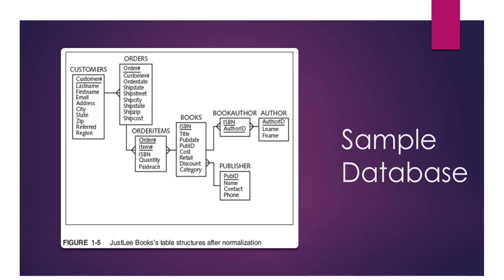This is the database we'll be using — a bookshop. We have a customers entity with customer ID, last name, first name, email, address, city, state, zip code, referred, and region. We have an orders table with order number as primary key and customer number as a foreign key. Order items has a composite primary key of order number and item number. Books has ISBN as primary key, book_author has a composite key of ISBN and author ID, author has author ID, and publisher has publisher ID. Today we are only looking at retrieving data from a single table, so foreign keys are not our focus.